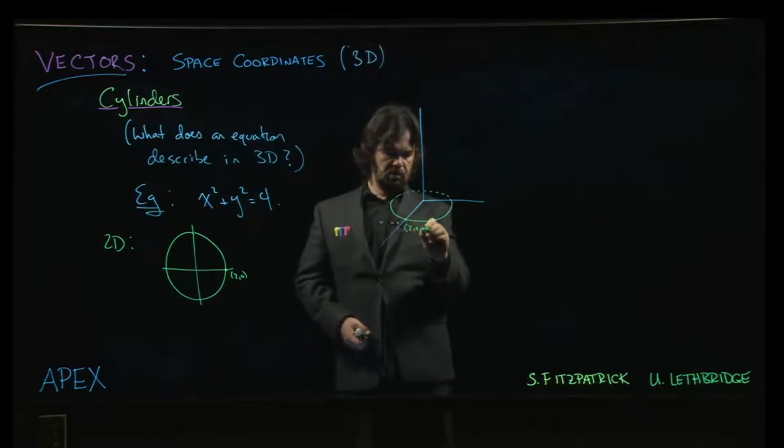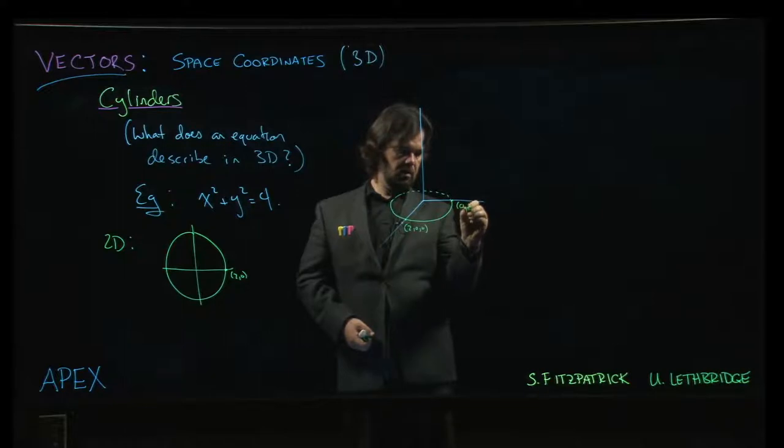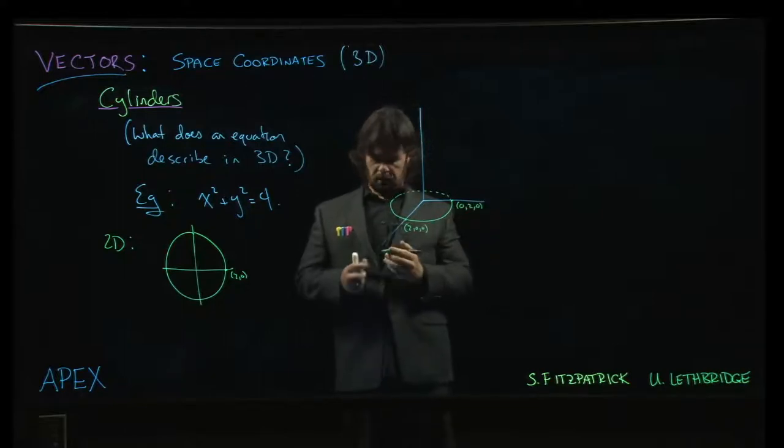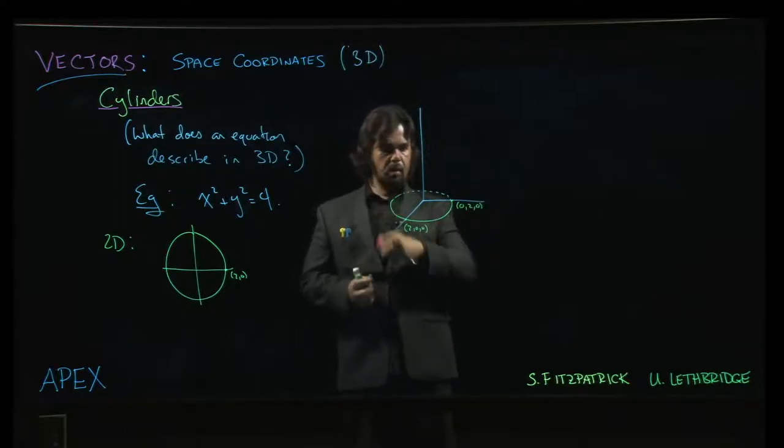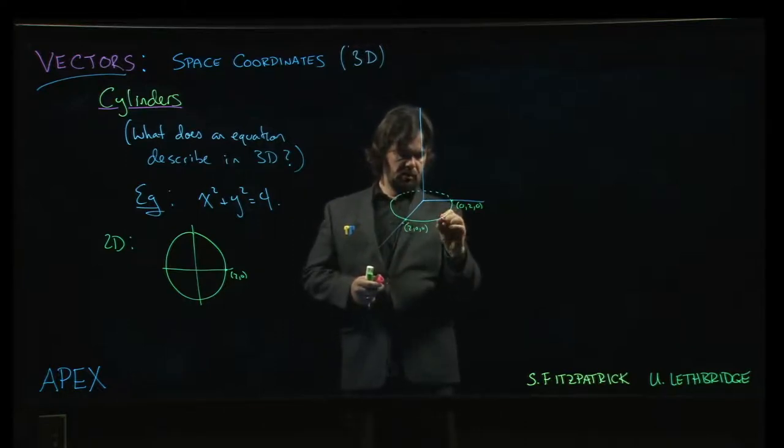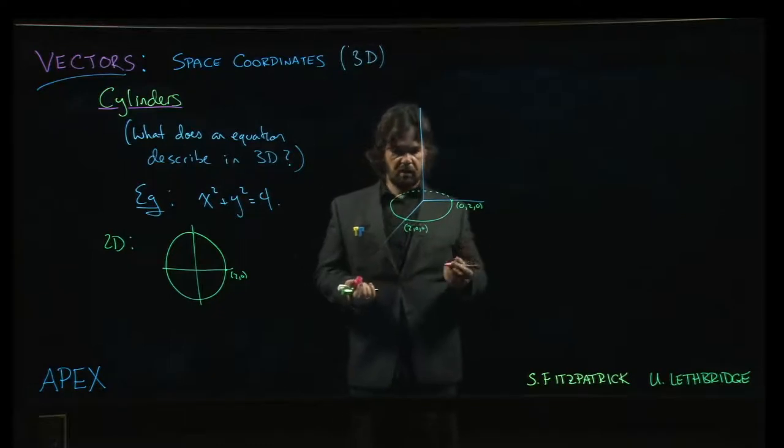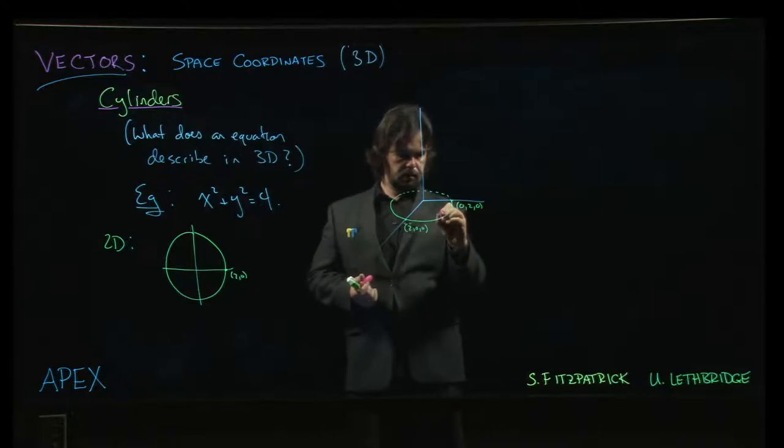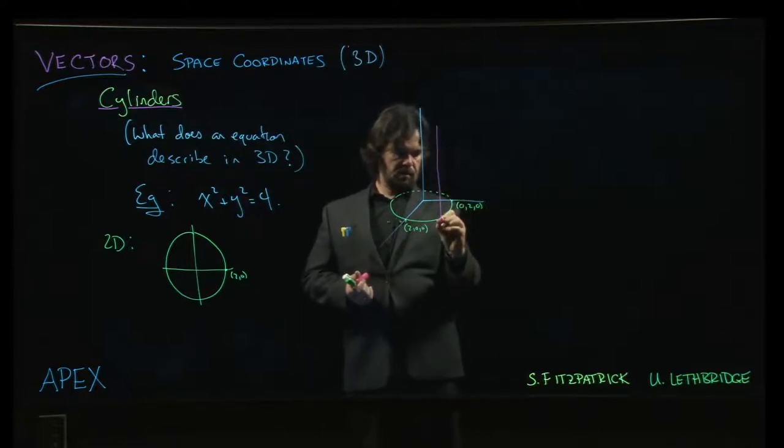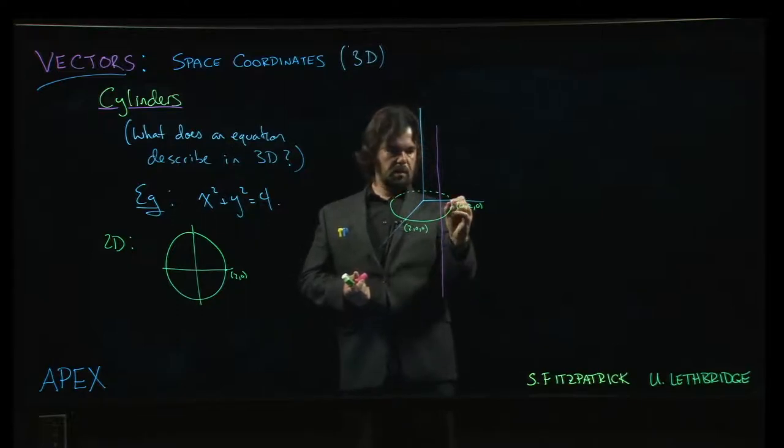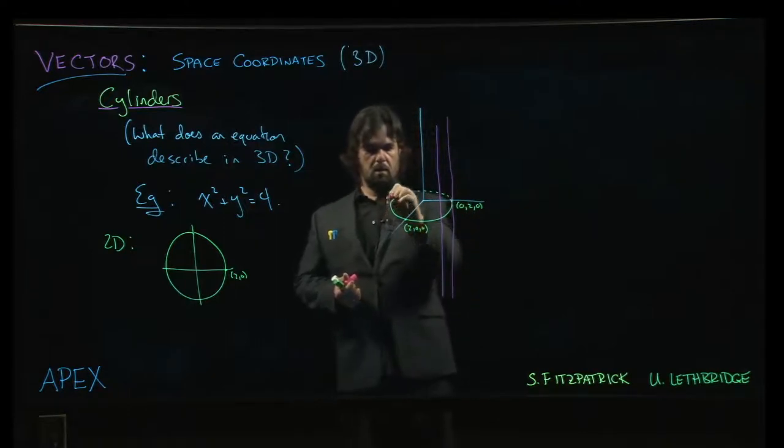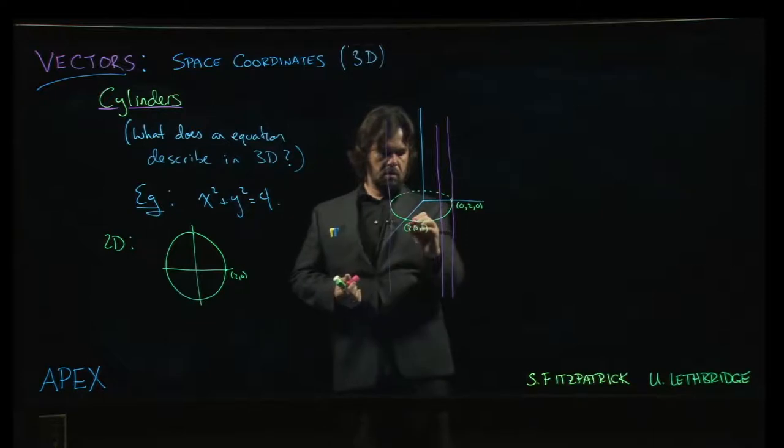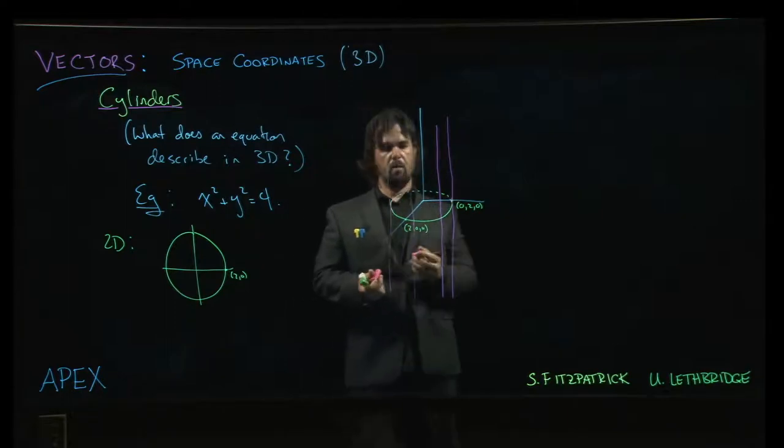Passing now through the points 2, 0, 0, and 0, 2, 0. But we can take any point on this circle and we can extend it in the z-direction, vertically, up or down. We can go through that point, through there and down, through there, up and down. We can do this for any point that we want.